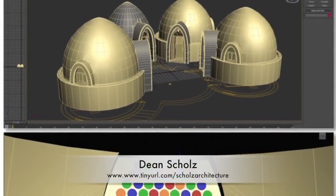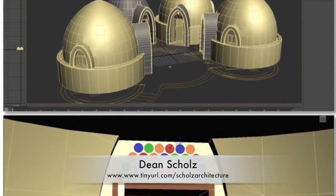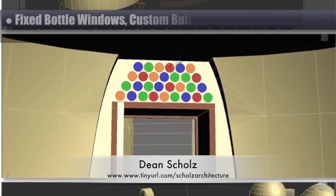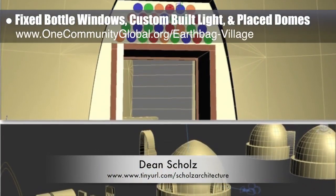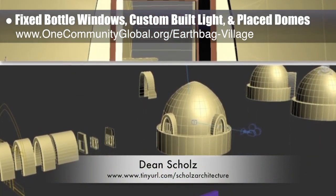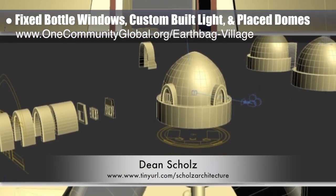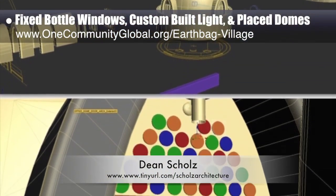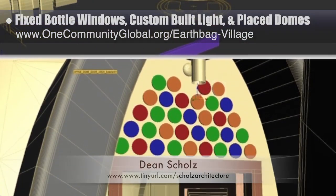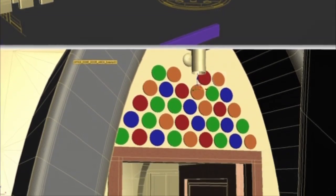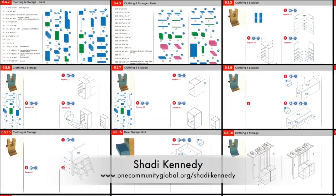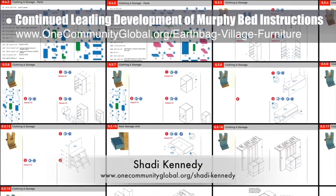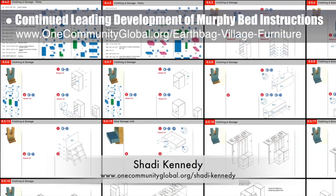Dean Schulz, architectural designer, continued working on the earthbag village — here's weekly update 157 from Dean. This week he fixed the recycled bottled windows over the door, custom built the light over them, and worked on the placement of the four domes.